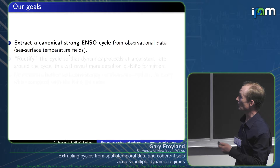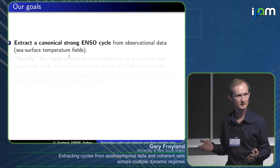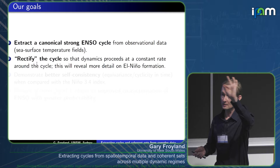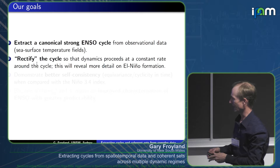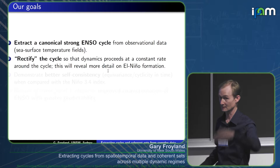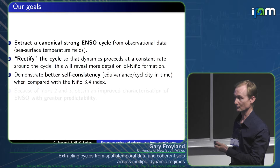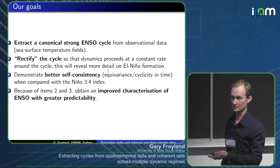Our goals are to extract a canonical strong ENSO cycle — what does an ENSO cycle look like? This is not really agreed upon. We want to do this directly from sea surface temperature fields. The cycle we extract proceeds around a circle at a constant rate — we call this rectifying — and this reveals more detail on the La Niña to El Niño formation. We'll also show better self-consistency in periodicity compared to the Niño 3-4 index.